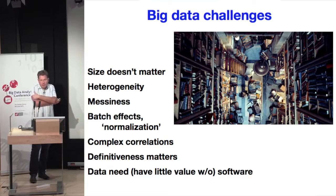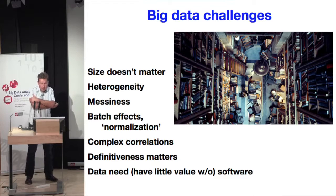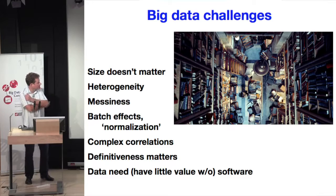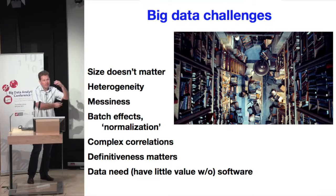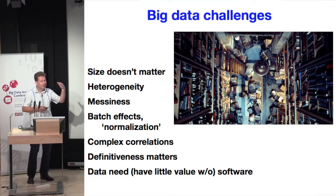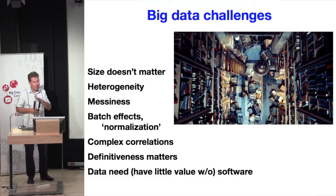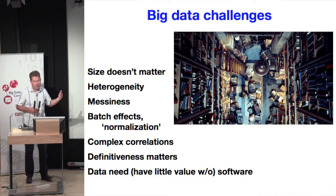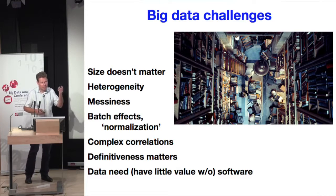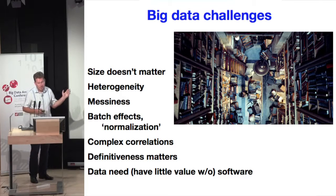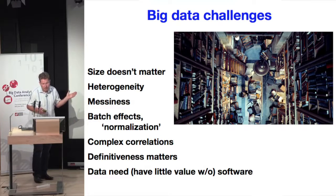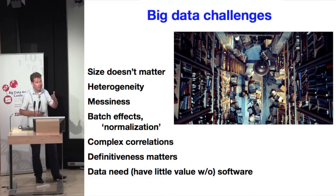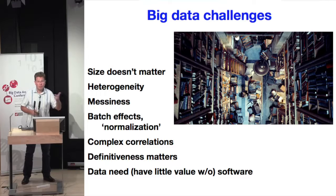So what do we get out of this for big data? Echoing a little bit what Dana said: size doesn't really matter here. The dataset sizes — I'm not worried about tables with billions of rows and processing them; that's in many ways a trivial task, just a matter of finding enough air conditioning. What actually is the challenge is the heterogeneity of the data. As you have seen, we have RNA profiling, genome sequencing, and the messiness of the data.